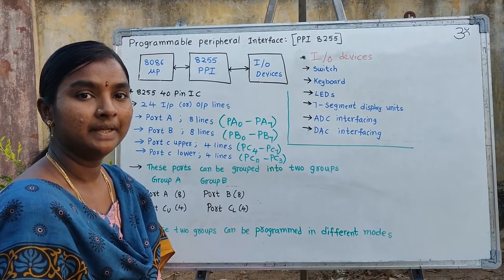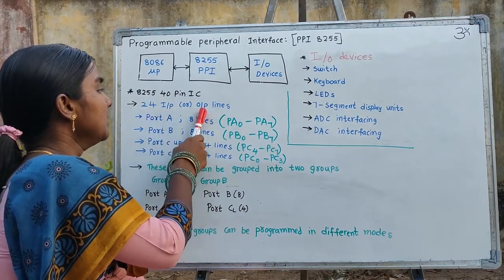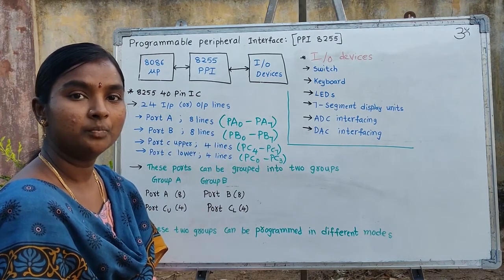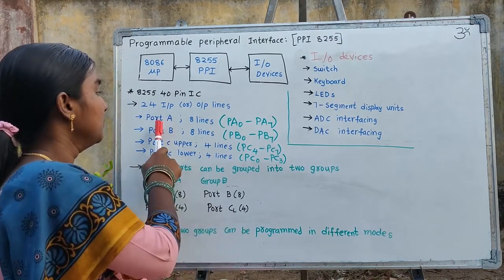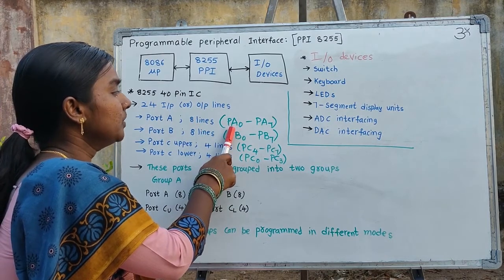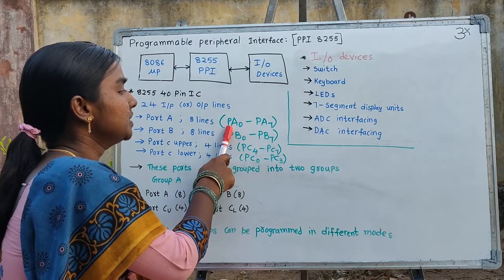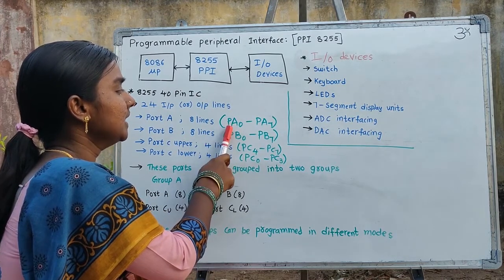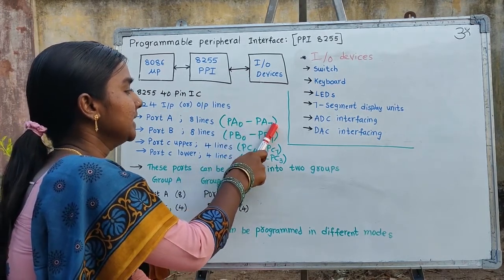As shown in the pin configuration, it consists of 24 input or output lines. These 24 input or output lines are divided into 3 ports. Port A consists of 8 lines, they are from PA0 to PA7. Here P means port and A means port A, indicating 8 lines from PA0 to PA7.